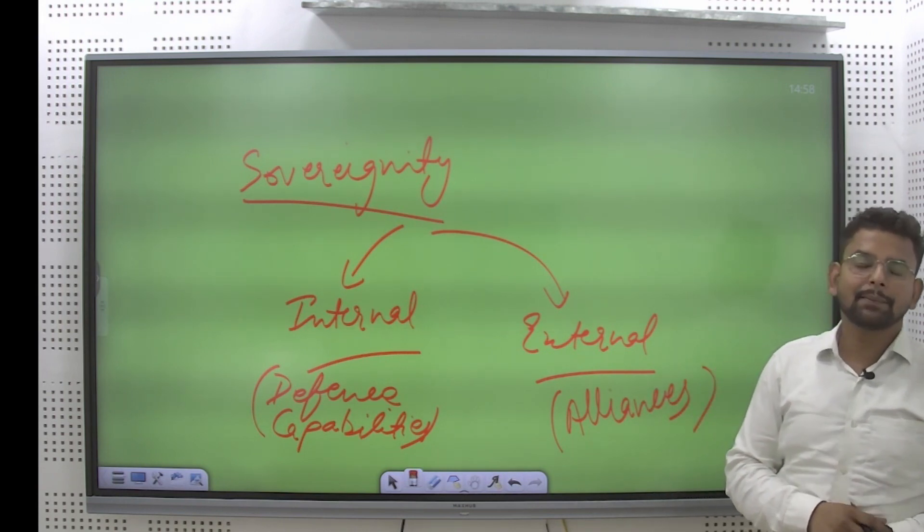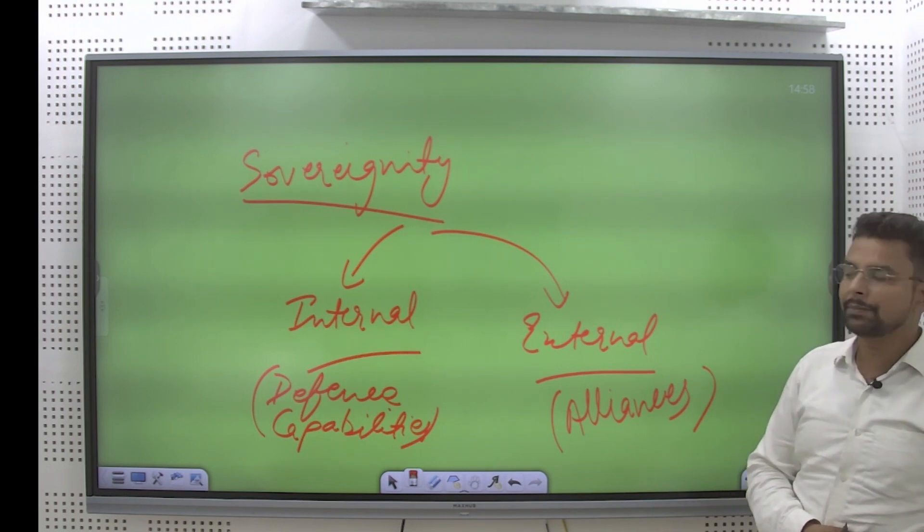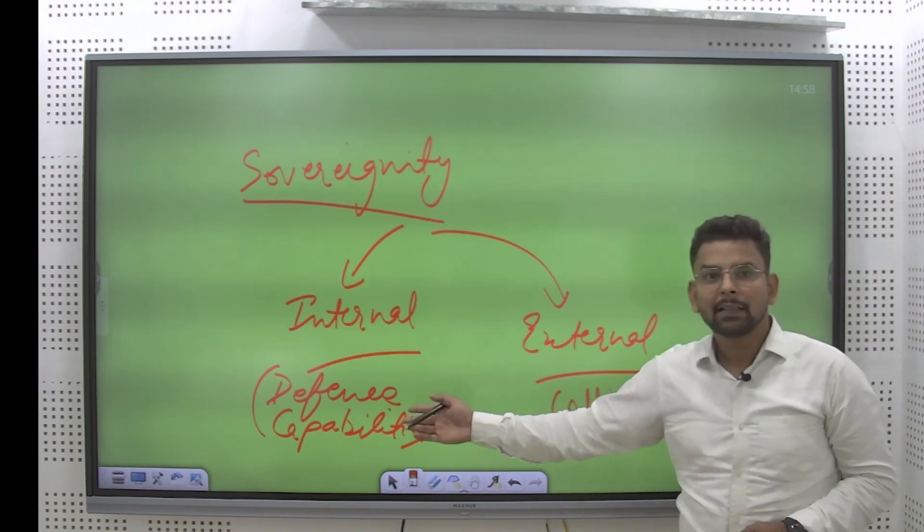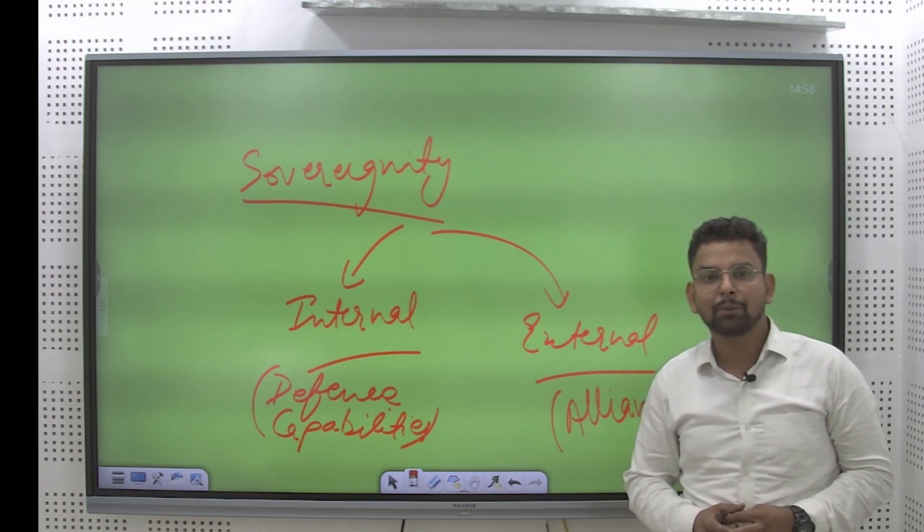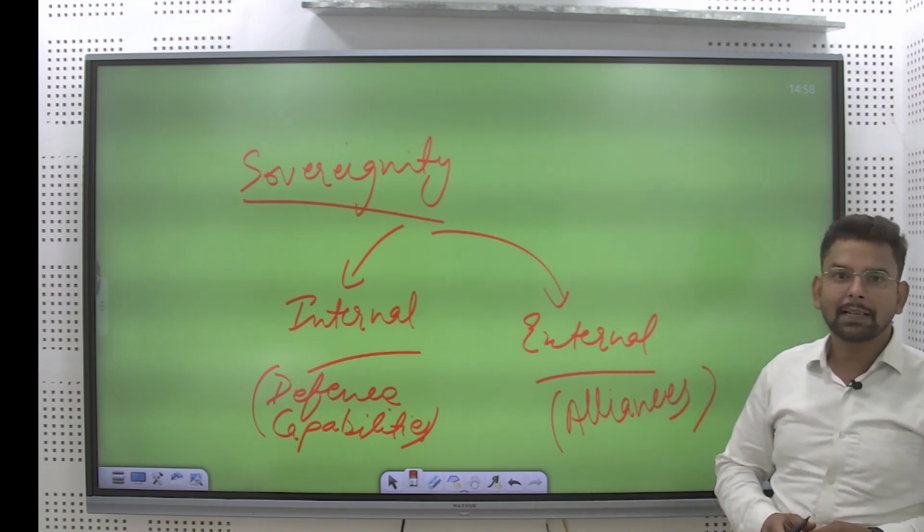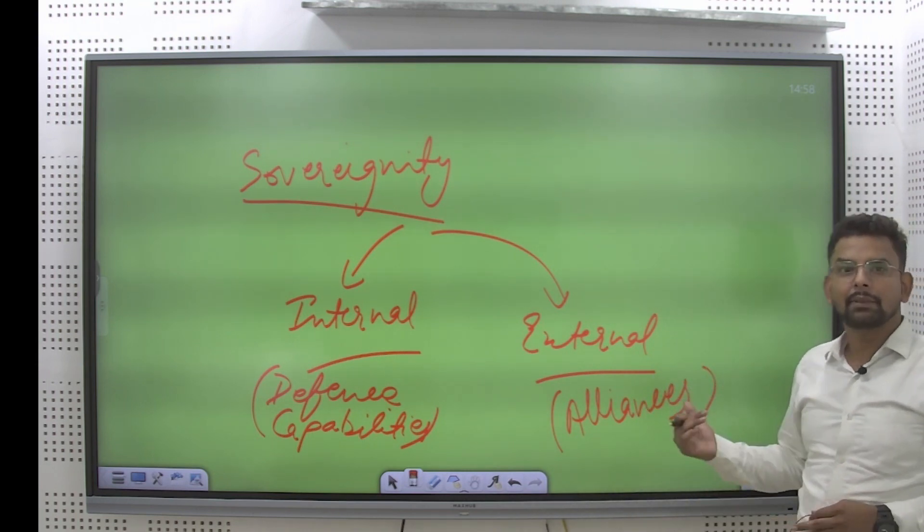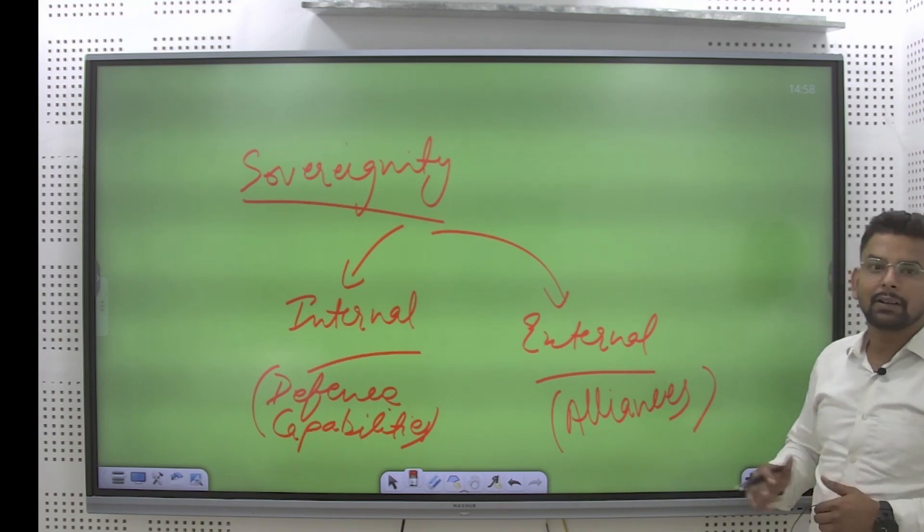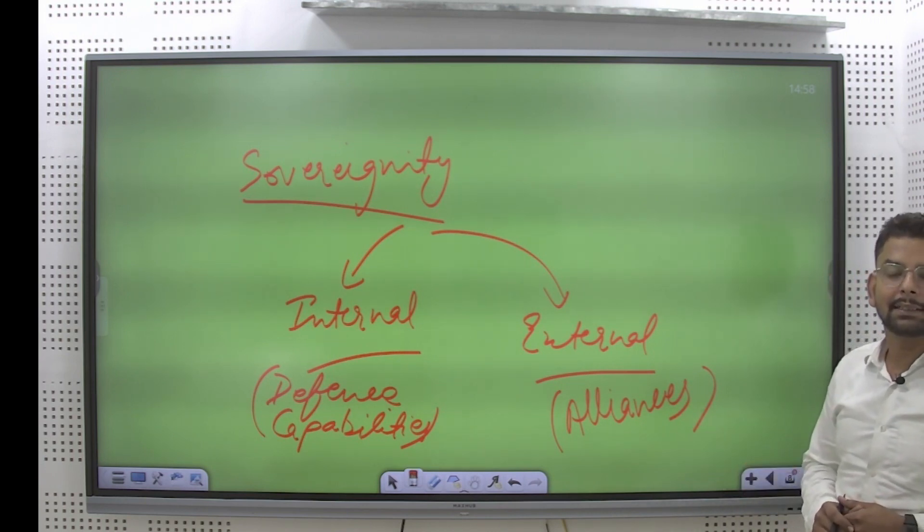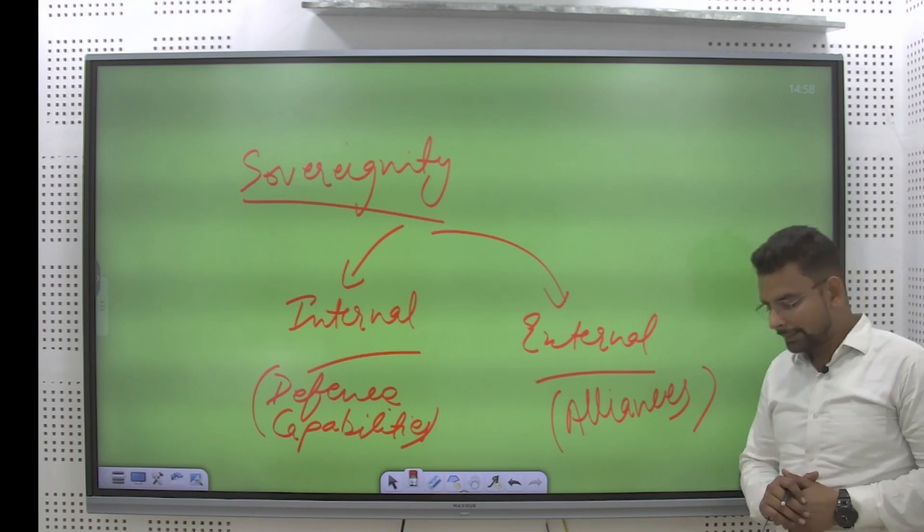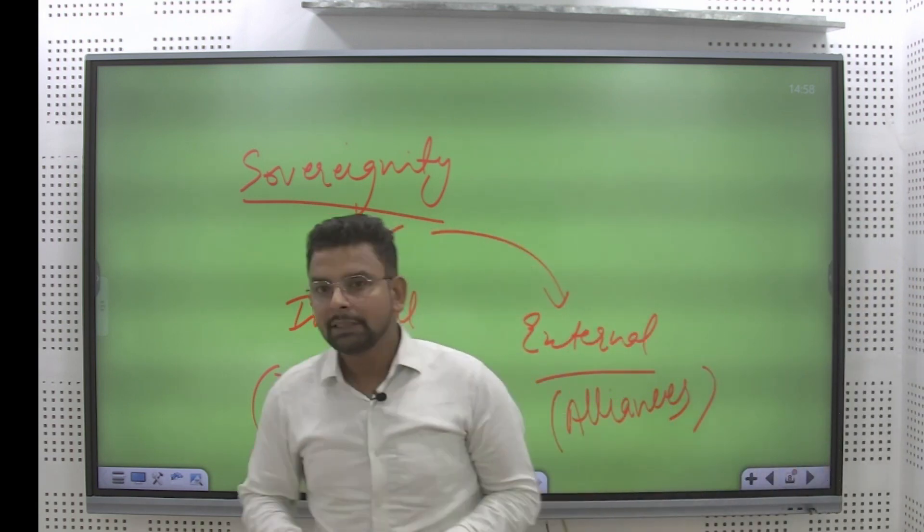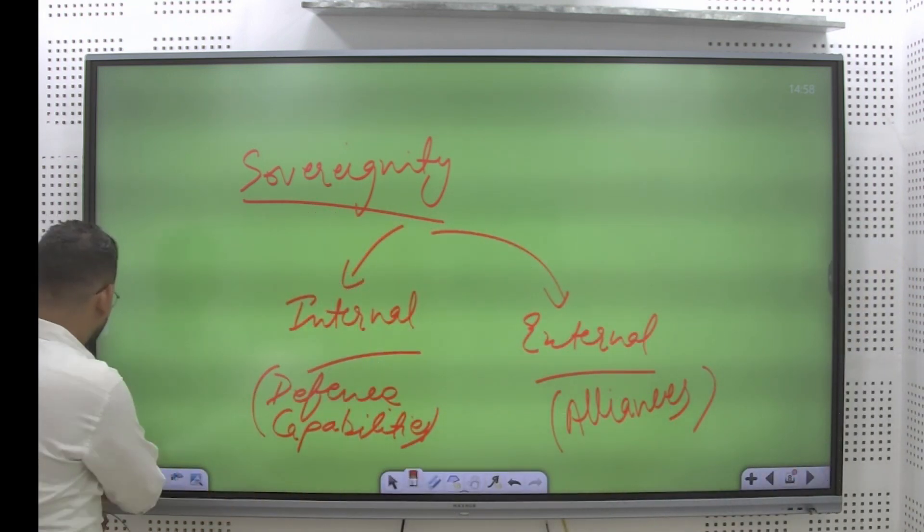By the internal sense, I mean to say we have to enhance our defense capabilities, which is more of a part of hard power. And from the external sense, I mean to say we have to go for the alliances. If you are a little bit aware of current affairs, you must be aware of the fact that we are one of the largest importers of arms and ammunition from the last two or three years. And at the same level, we are also working on different alliances like that of Quad.